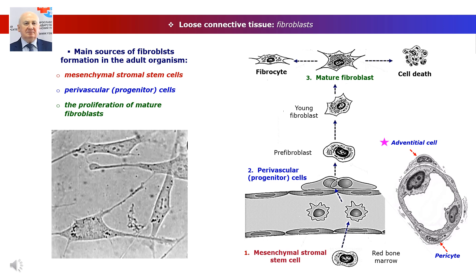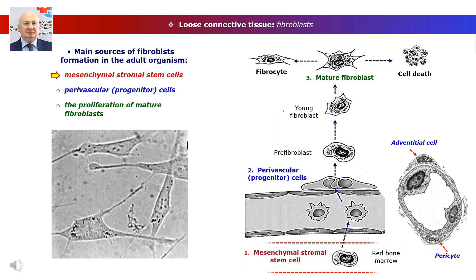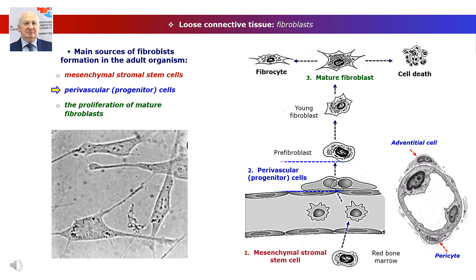Thus, an increase in the number of fibroblasts is possible through the proliferation and accelerated differentiation of mesenchymal stromal stem cells, cambial perivascular or progenitor cells, as well as through the proliferation of mature fibroblasts themselves.